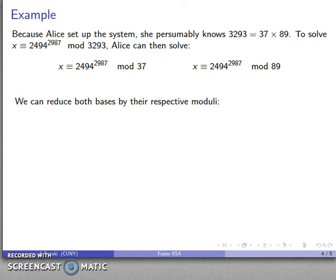We can reduce both bases by their respective moduli. So 2494 mod 37 is 15. 2494 mod 89 reduces all the way down to 2.